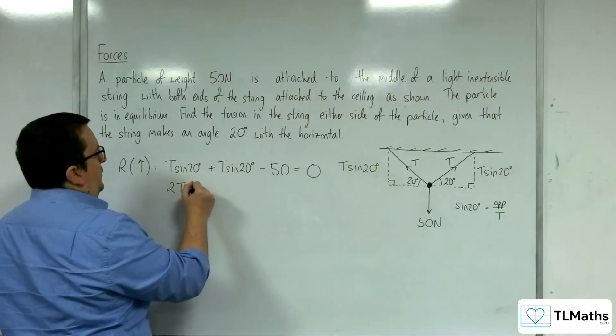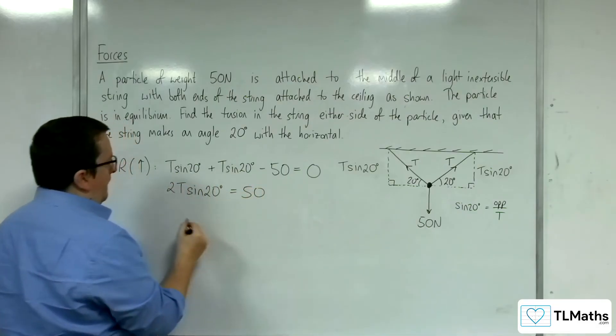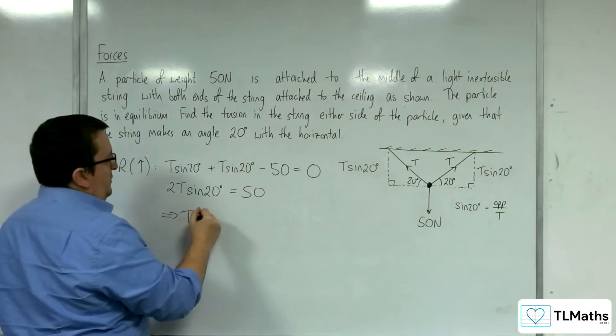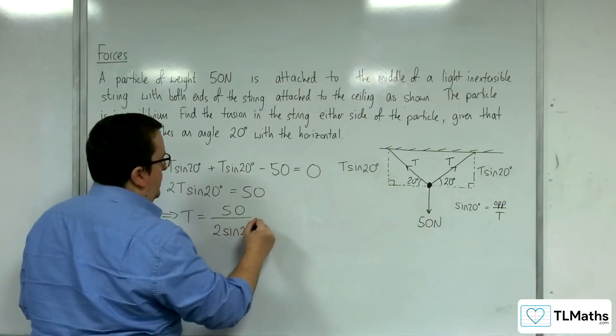So, 2T sine 20 must be equal to 50. So, T has to be 50 divided by 2 sine 20.